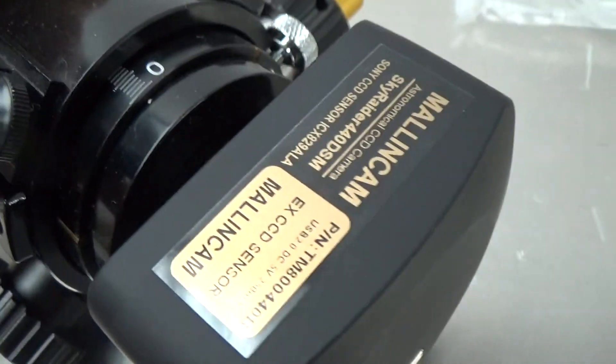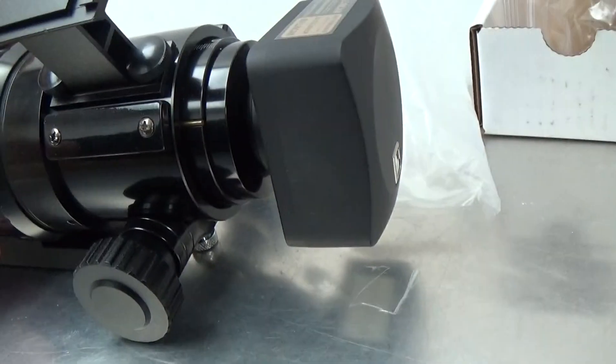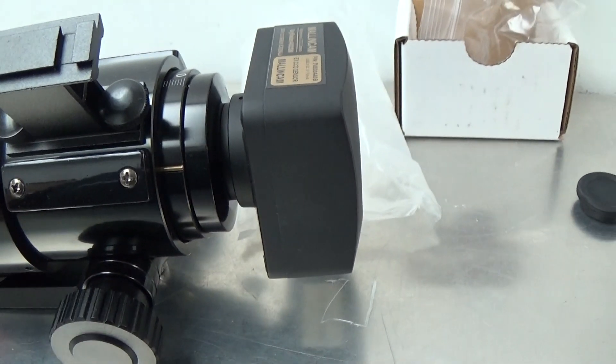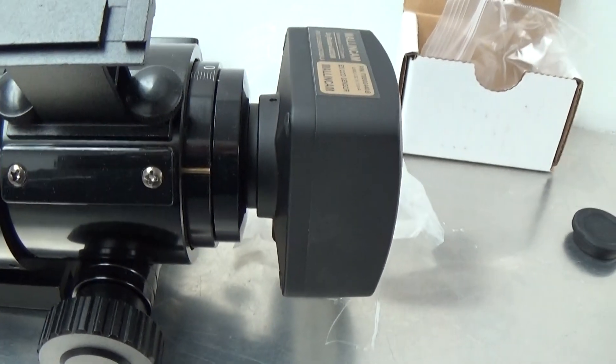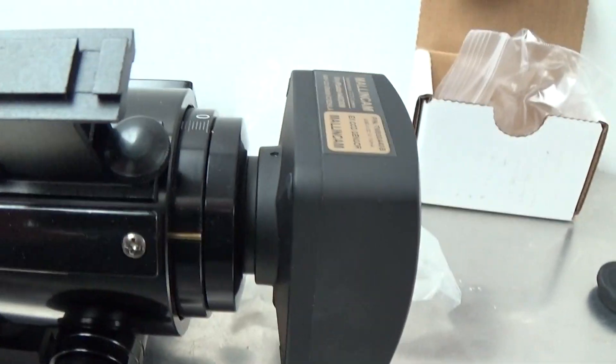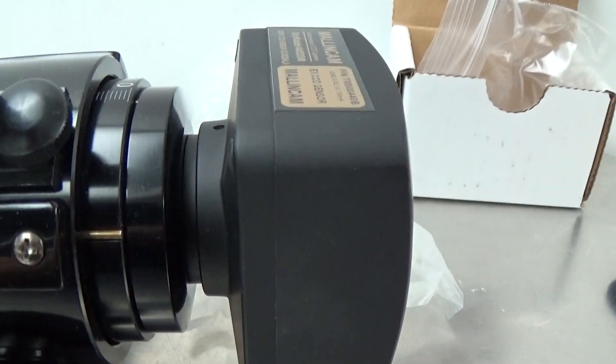And that's pretty much how you set up a focal reducer MFR-8 onto the Skyraider camera to have greater focal reduction. Thank you for watching. Hoping this short video segment has helped you set up your focal reducer on your Skyraider.